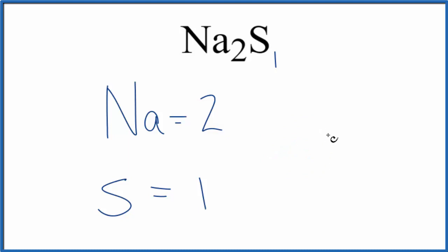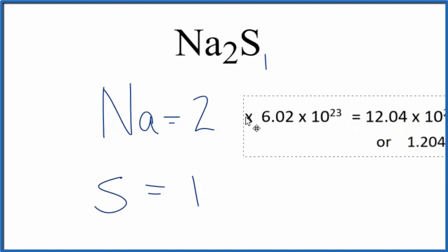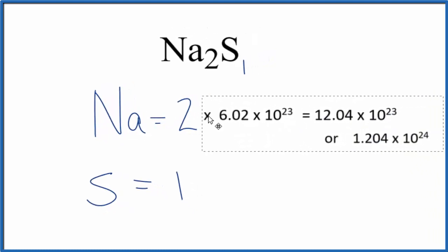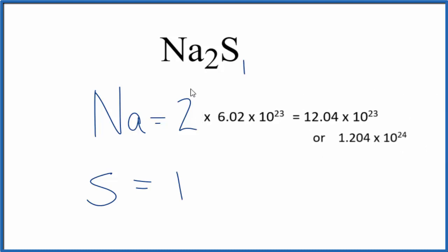Sometimes you're asked to find the number of atoms in one mole of Na2S. If you're asked to do that, what you do is you take the number of atoms — say for sodium, two — and you multiply that by Avogadro's number. So two times Avogadro's number, that'll give us the number of sodium atoms in one mole of Na2S.